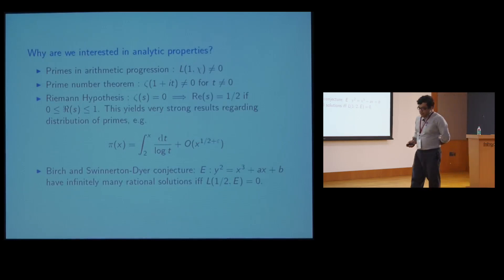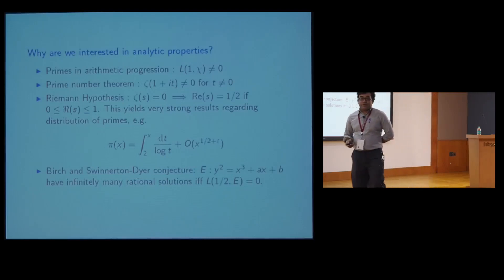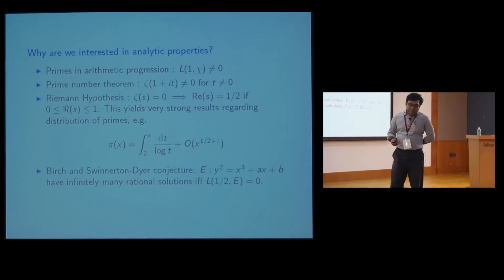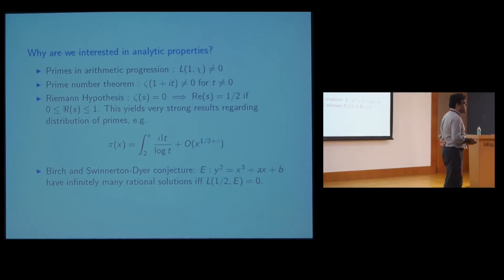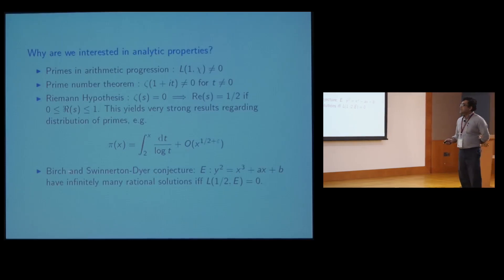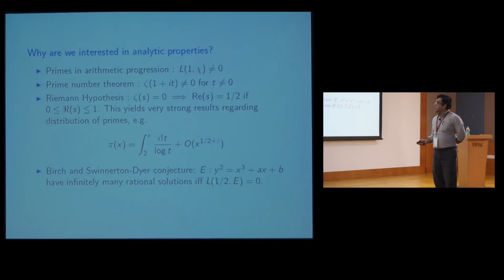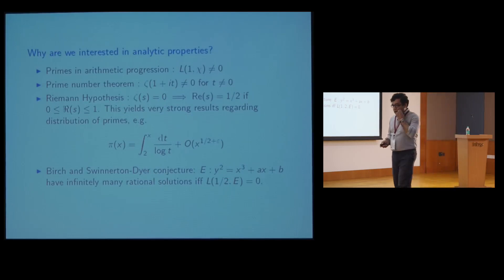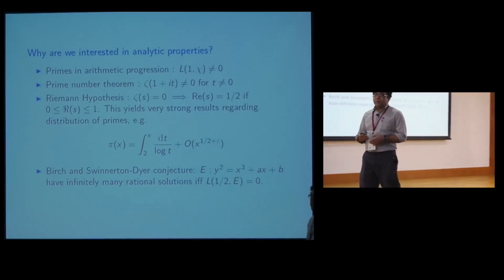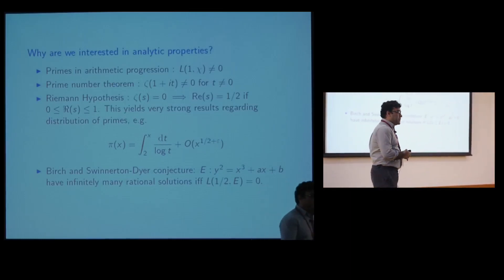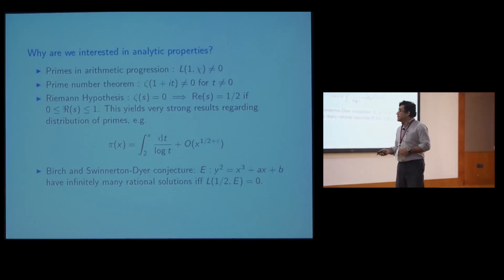There are other conjectures connecting L-functions to number theory. For elliptic curves, the problem is to determine whether there are infinitely many rational solutions. The famous Birch and Swinnerton-Dyer conjecture says that an elliptic curve has infinitely many rational solutions if and only if the attached L-function vanishes at the point s = 1/2. This still remains an open problem. These are the number-theoretic problems related to properties of L-functions, which is why we are interested in studying them.